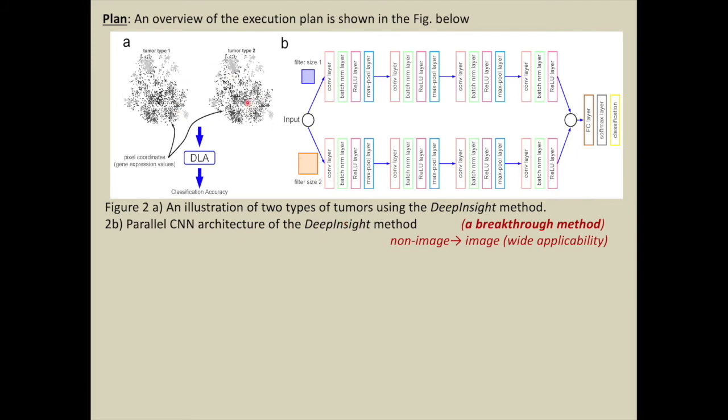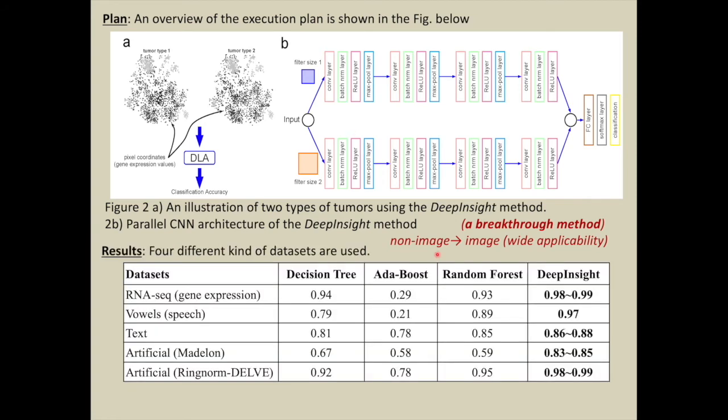Once images are created from non-image samples, they are sent to CNN architecture. We have used parallel architecture. However, it is up to the user to select suitable architecture based on one's requirements.